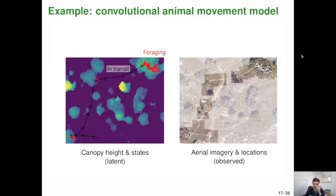So here's an example of a convolutional animal movement model. This is a simulated example. On the left-hand side, I've got a simulated movement trajectory of an animal that likes to forage in canopies of trees. So the sort of viridis map on the back shows canopy height. And this animal has two behavioral states. One would be foraging within a tree. One would be in transit moving from tree to tree. And let's assume that all we have access to is maybe some aerial imagery and the locations of the animal shown here on the right. So how can we use this information to actually estimate how the environment relates to the behavioral states of an animal?